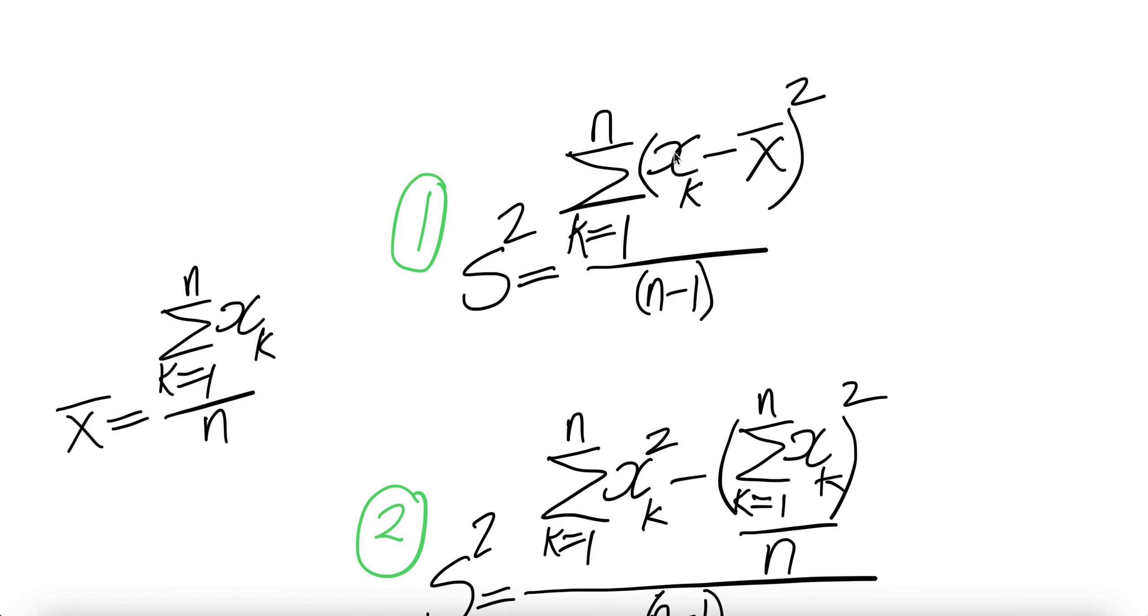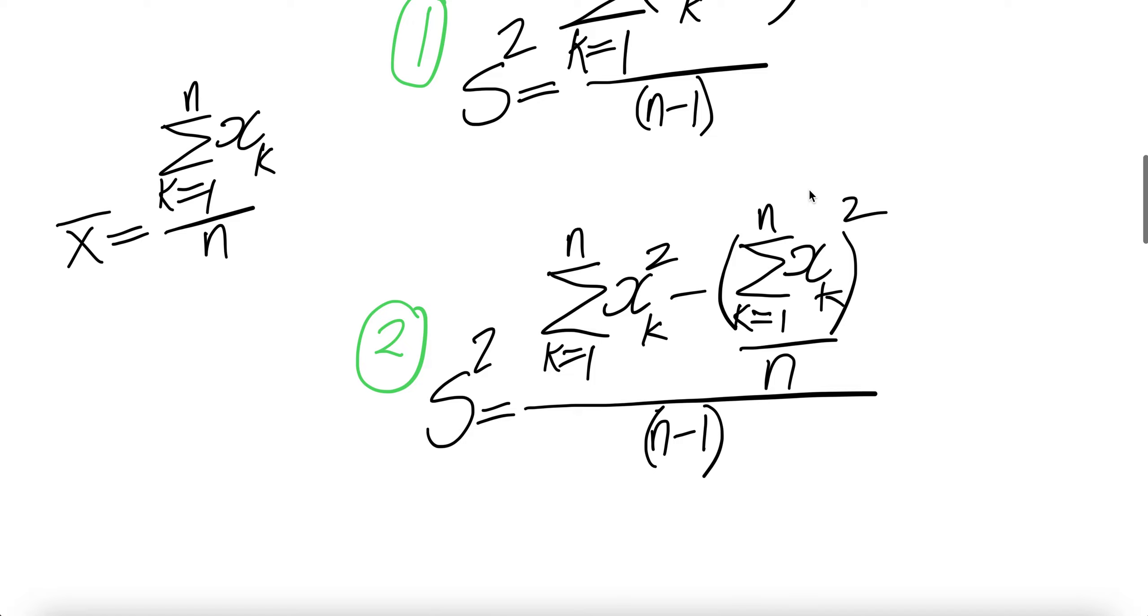Notice that here you need to compute bar x because we need to minus the individual xk from bar x. Over here, we don't need to compute bar x. We just compute the sum of the n observations squared divided by n.